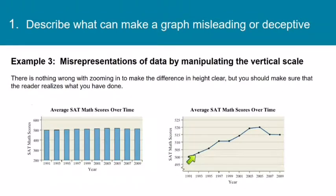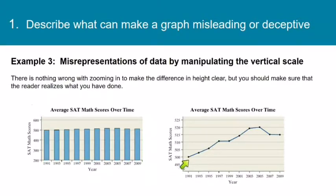If we look at the same graph zoomed out so that the vertical axis starts at 200 instead of 495, you can see that the scores do rise and fall just a little bit, but not as drastically as before. Here's the same data presented as a time series graph, and they put a little break in the axis to draw the reader's attention to the fact that we are zoomed in on the vertical axis. There's nothing wrong with zooming in to make a difference in height clear, but you should always make sure that the reader realizes what you've done.